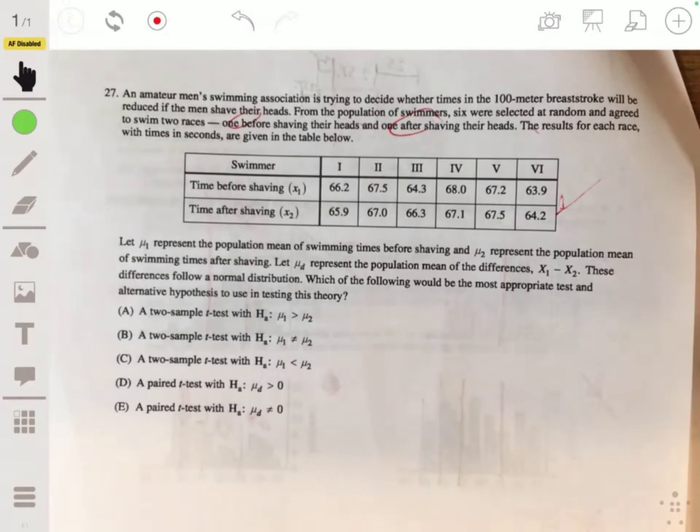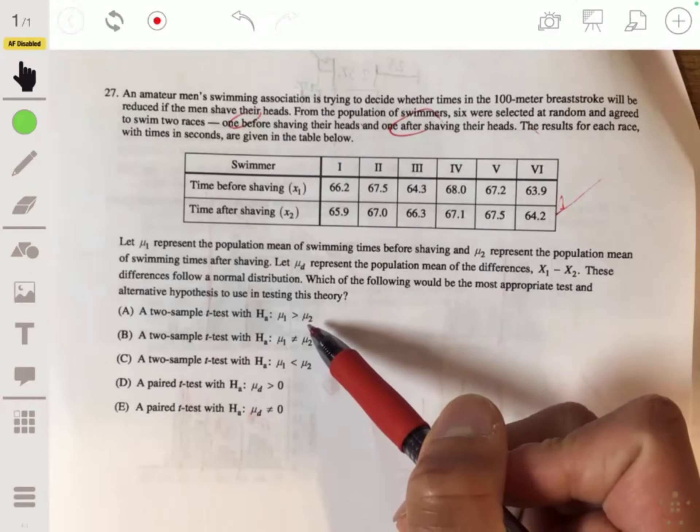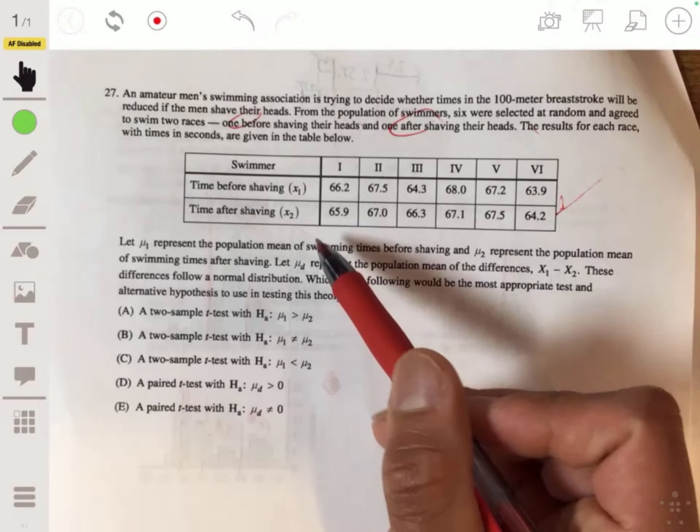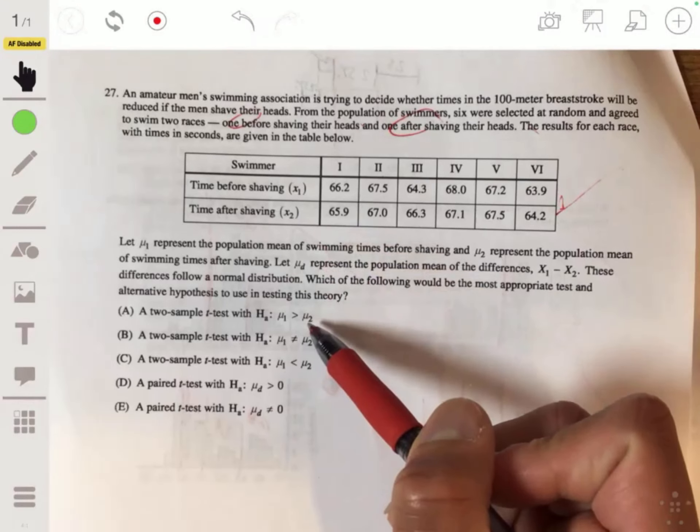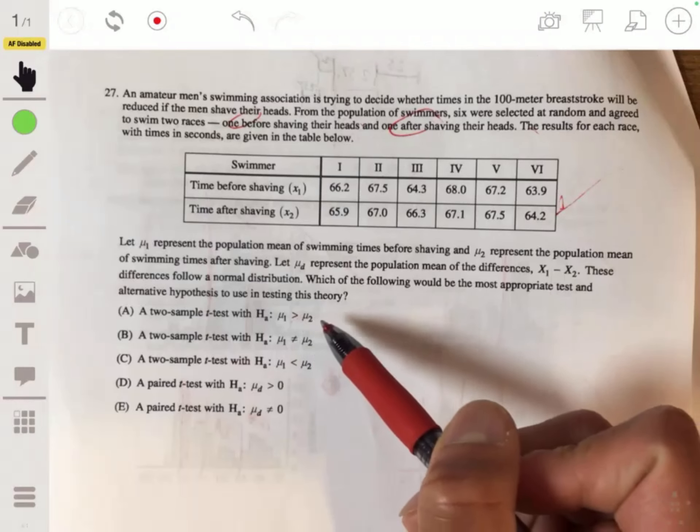Okay, so you want to assume that there is no difference. The null hypothesis would be that there is no difference. And the alternative would be that you swim faster with the shaved head. But when you swim faster, that means your time is less.